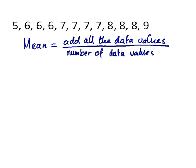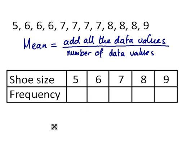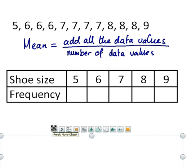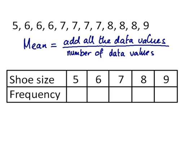Okay, finding it from a frequency table isn't going to be too dissimilar. Let's see how that list of numbers, which is actually the shoe sizes of 12 students, how that fits into a frequency table.